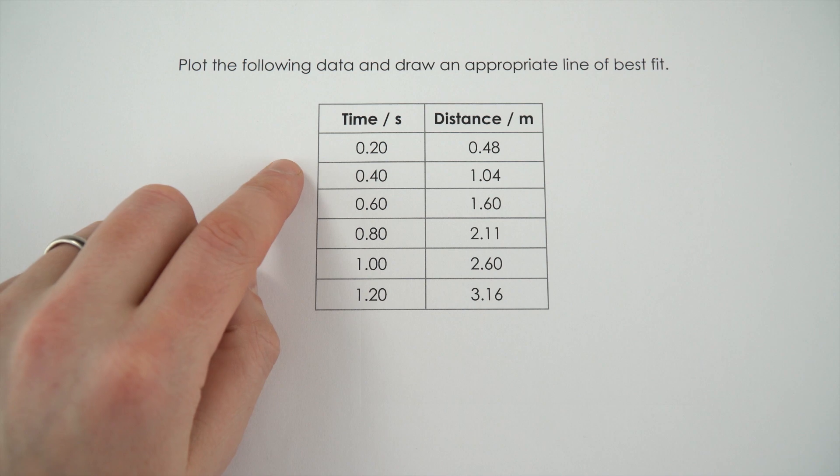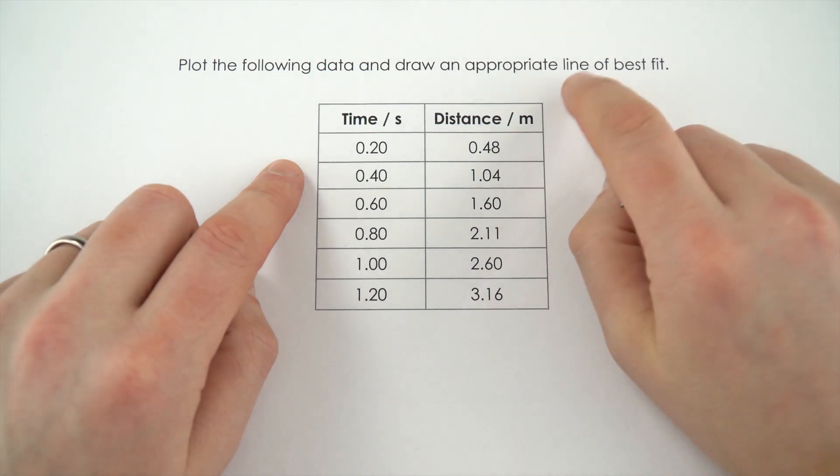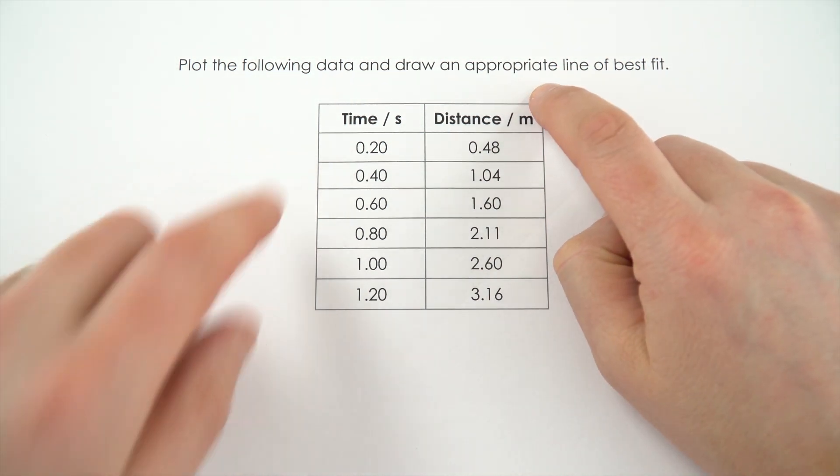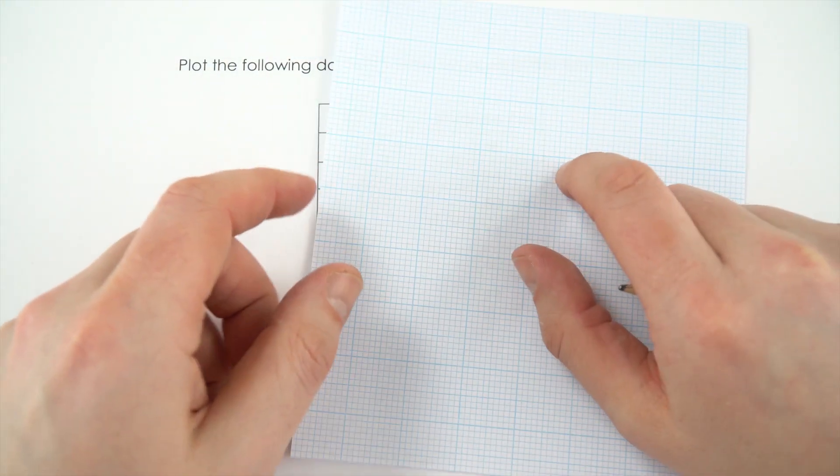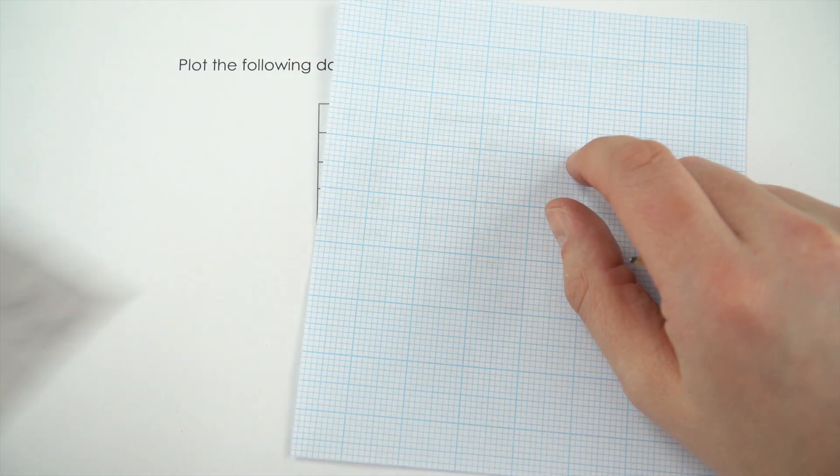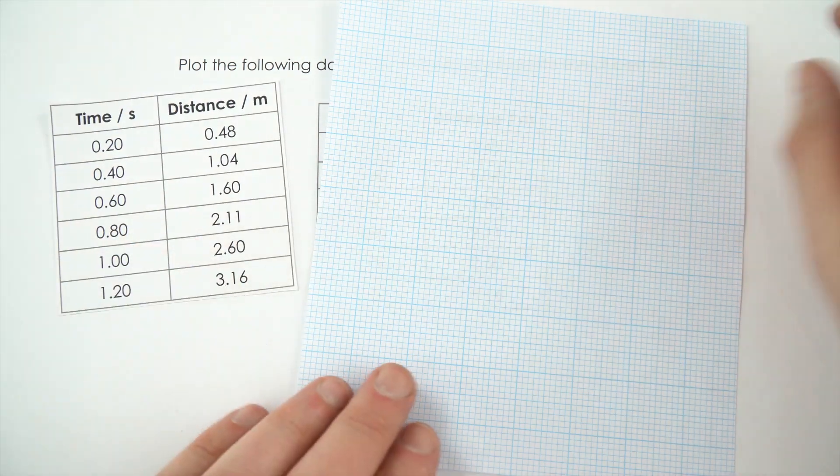In this example, we've got some data that we need to plot and then decide on an appropriate line of best fit. To do this, I'm going to use a piece of graph paper, and I've also got another copy of my data here that I'm going to plot.